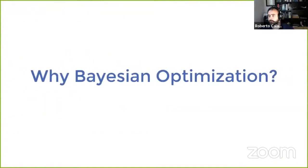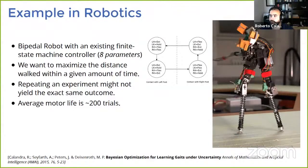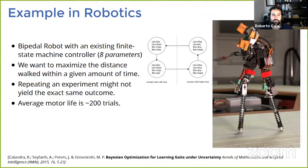Let me start by saying why Bayesian optimization. I'm going to show you an example in robotics, my field. This is a real example I was working on at the beginning of my PhD in 2013. We had a bipedal robot — a quasi-passive dynamic walker — which in theory could walk really fast. We had a controller designed by a previous PhD student from biomechanics, and our goal was to try to walk as far and as fast as possible. We essentially just had to find the right parameters to make it walk.